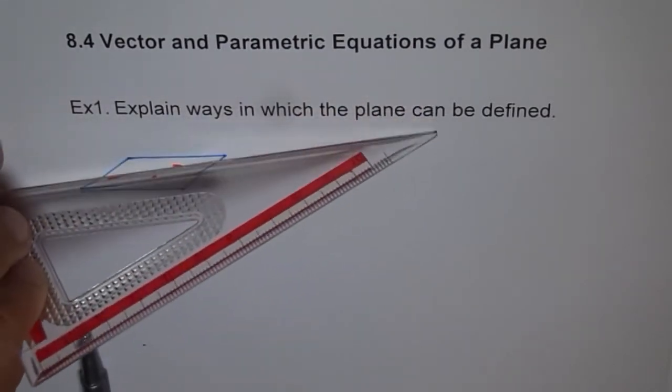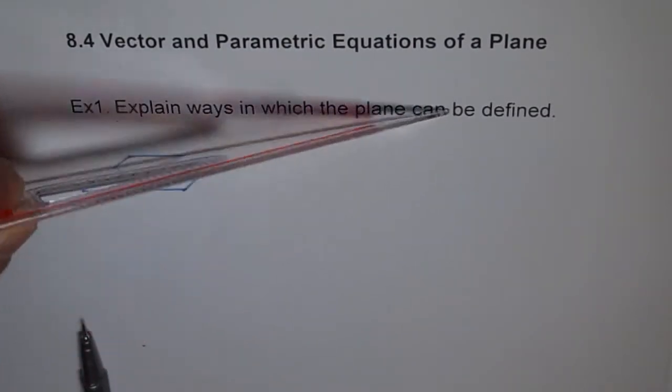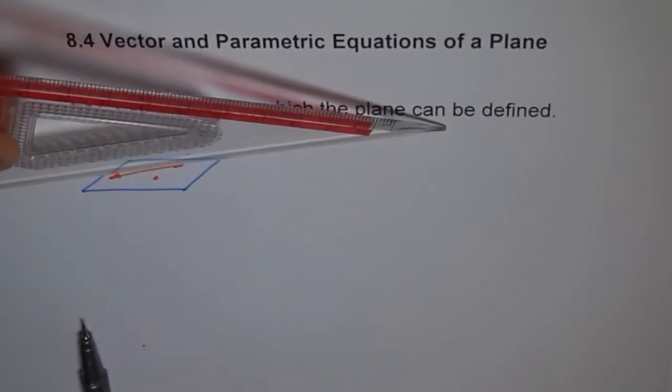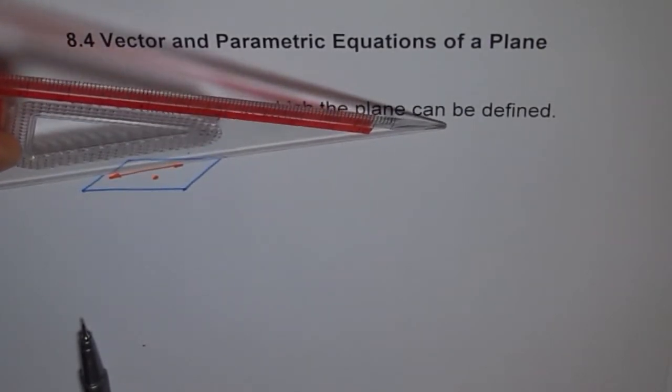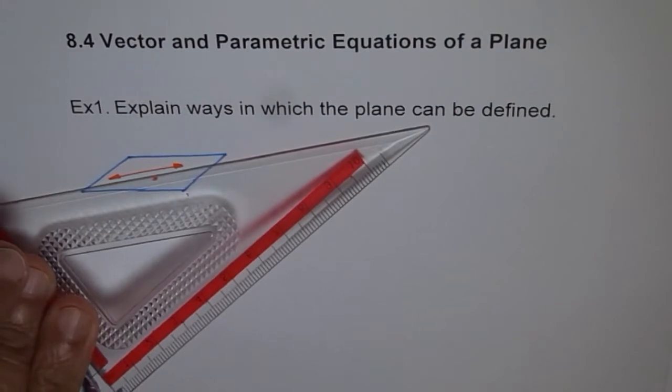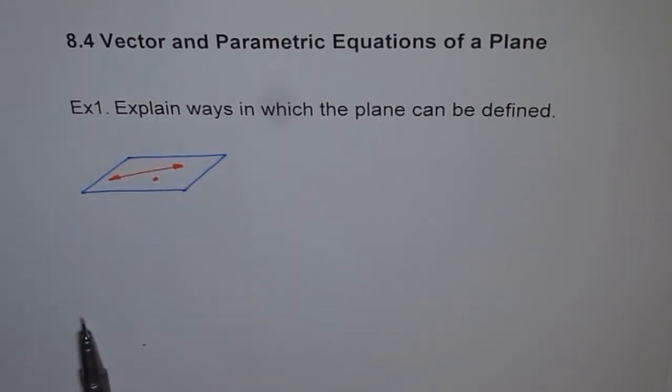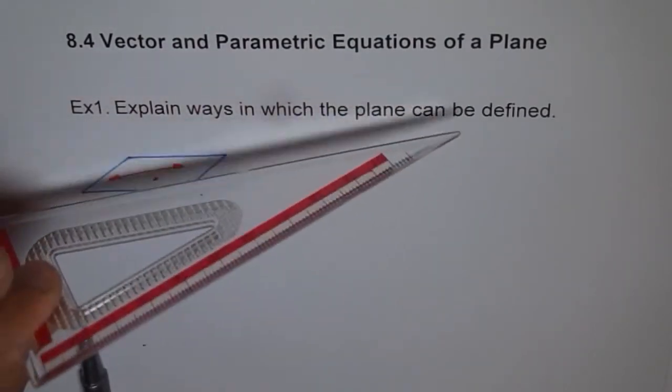Imagine this line - we can have a plane going like this, like this. In so many directions, a plane can go through this line. Do you see that? So a plane is not uniquely defined if you only have a line. You can just go through the paper at any angle.